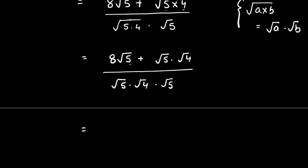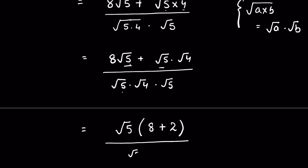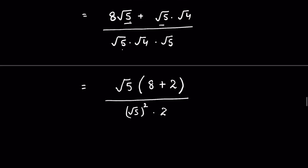Now we take square root of 5 as common in the numerator, and square root of 4 equals 2. So the numerator becomes 8 plus 2, and the denominator is square root of 5 times square root of 5 — which is square root of 5 squared — times square root of 4, which is 2.